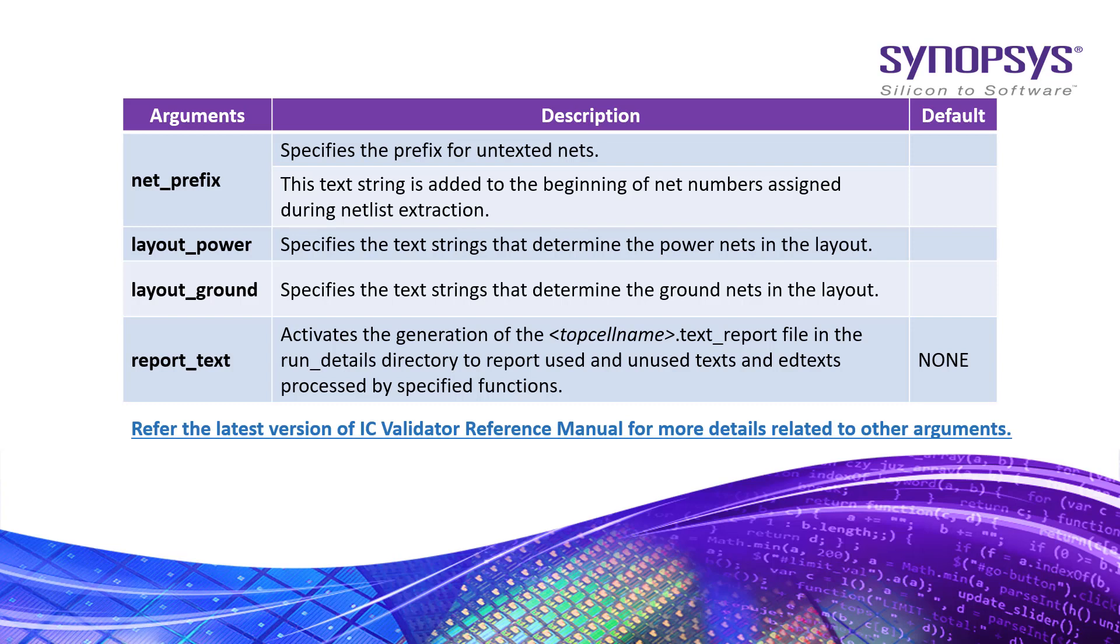This text string is added to the beginning of net numbers assigned during netlist extraction. The layout_power argument specifies the text strings that determine the power nets in the layout.